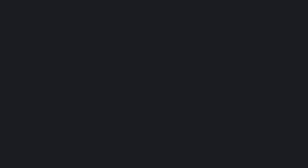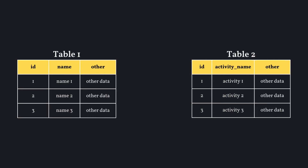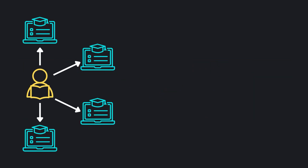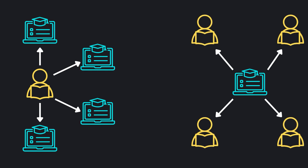In many-to-many relationships, a record in one table can relate to multiple records in another table, and vice versa. You can imagine a scenario where students enroll in various courses, and each course has multiple students. This is a basic example of a many-to-many relationship.